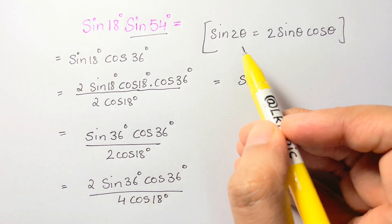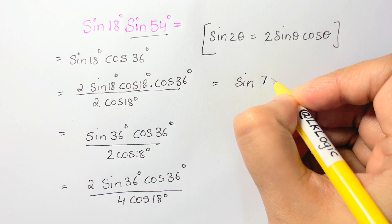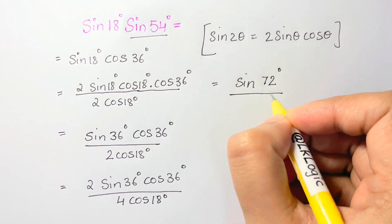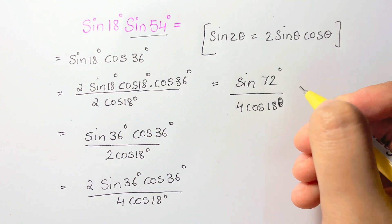Now we can apply the same thing again. Twice 36 is 72. So we'll have 2 times 36 is 72. So we'll have sine 72 degrees over 4 cos 18 degrees.